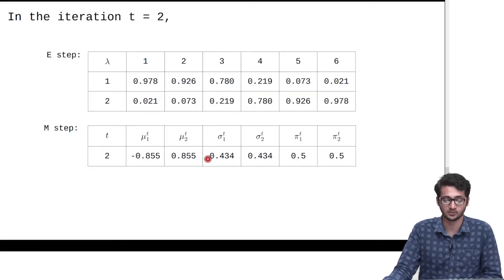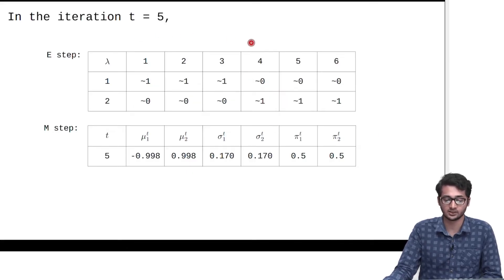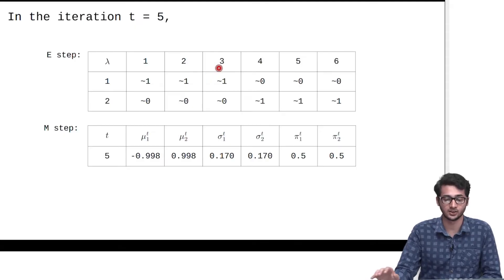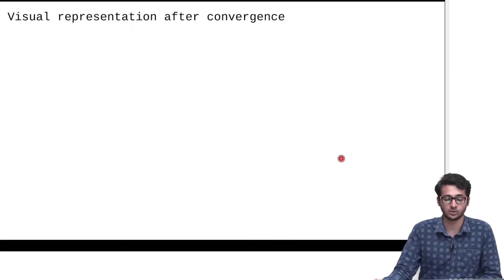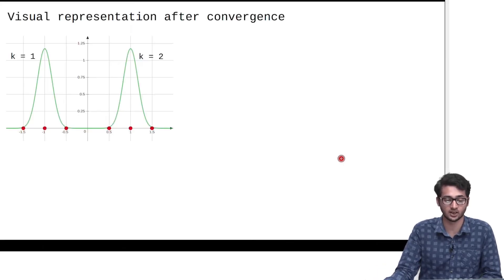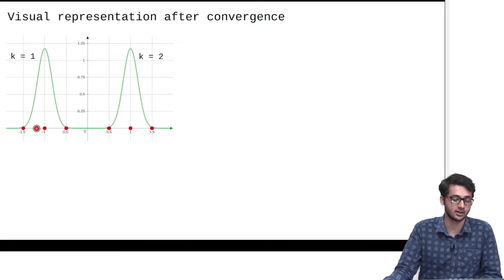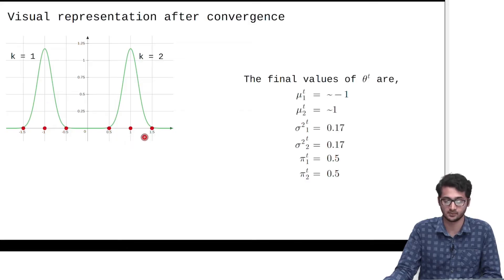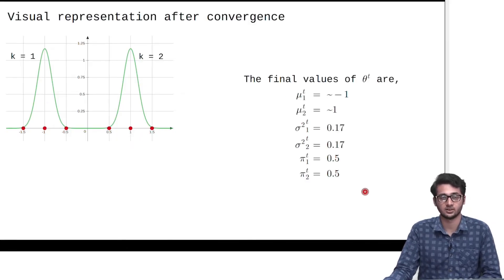As we go towards iteration 5, we can see that points 1, 2, 3 are likely to have come from the first distribution, whereas points 4, 5, 6 are likely to have come from the second distribution. The mu and sigma values also seem to have converged. If we have a visual representation after convergence, we can see that the distributions are centered around minus 1 and 1, with the variance as shown. These are the final values after convergence.